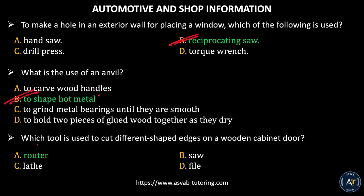Next question: which tool is used to cut different shaped edges on a wooden cabinet door? Option A, router. Option B, saw. Option C, lathe. Option D, file. The correct answer is Option A, router.